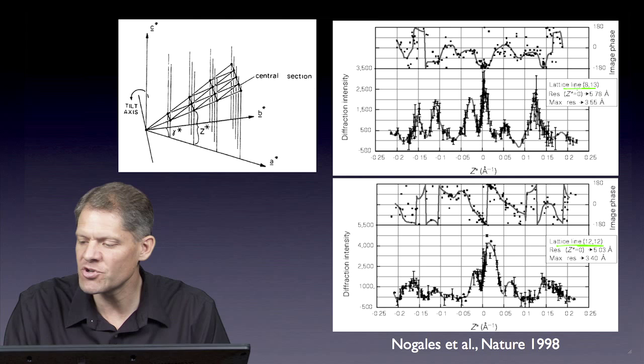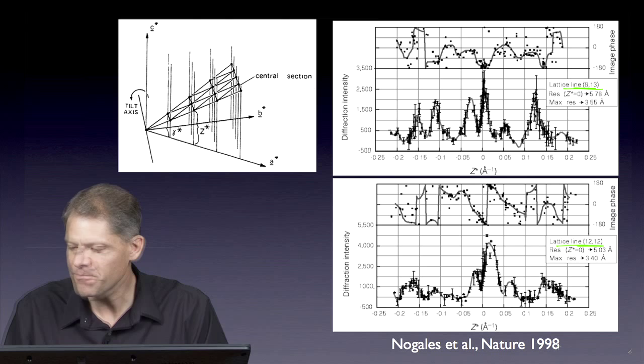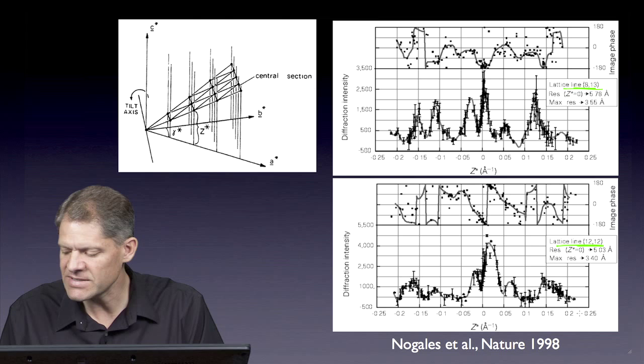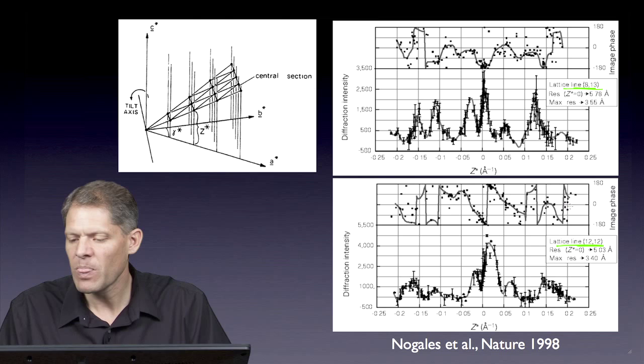Here's a separate plot for the lattice line 1212. These were the two examples shown in the paper from Ava Nogales in Nature 1998 of tubulin 2D crystals. Here's the plot for the 1212 lattice line, again going in z from low z to high z, and plotting both the amplitudes and the phases.